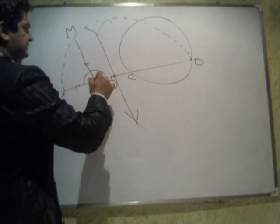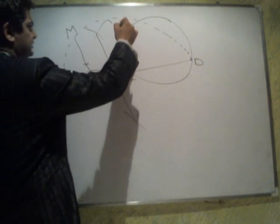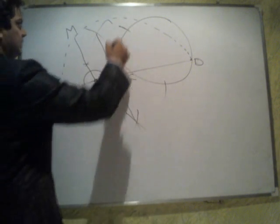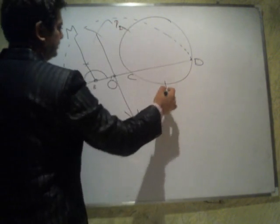With B, take a standard measure of BM, and with B as center, M as radius, make two arcs, let it be P1 and let it be P2.